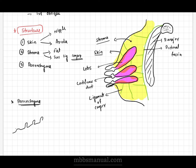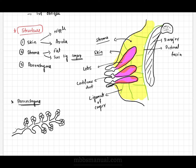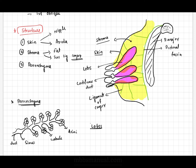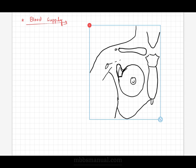Parenchyma, or glandular tissue of the breast, is the main component and helps in secretion of milk to feed the newborn baby. It contains 15 to 20 lobes arranged in a lobular fashion, and each lobe is further divided into various lobules, and each lobule further divided into clusters of acini. The produced milk will be temporarily stored in the lactiferous sinus and later drained via the lactiferous duct and nipple.